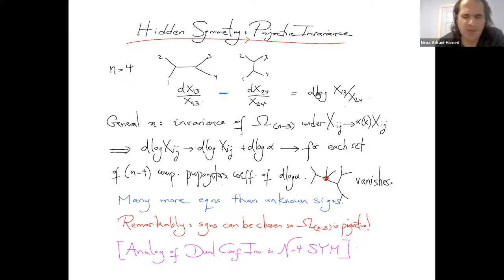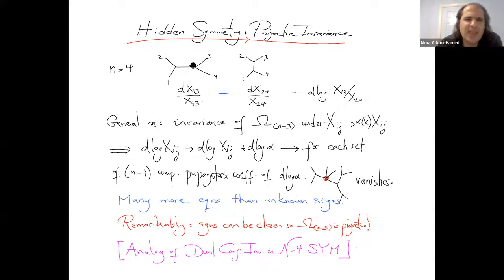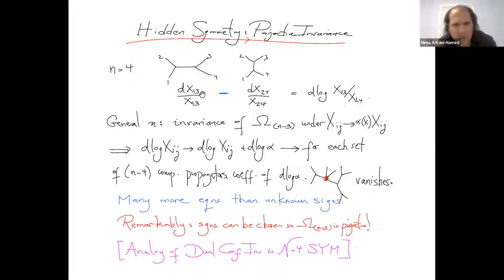Even these tree amplitudes in the phi-cubed theory have a hidden symmetry. To see it, we talk not about the amplitude itself but about a differential form closely related to it. Instead of writing 1 over x13, we write dx13 over x13; instead of 1 over x24, we write dx24 over x24. These are forms with logarithmic singularities, as expected for positive geometries discussed in the last lecture.